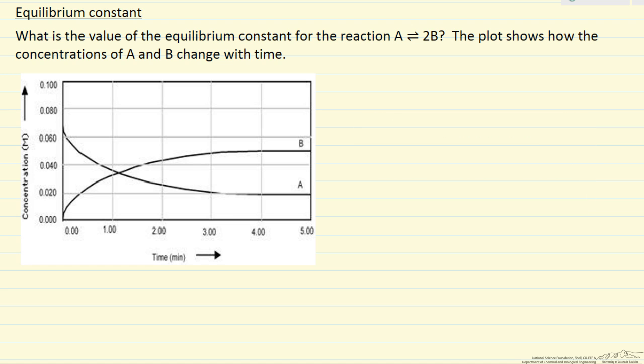So we are going to calculate a value of Kc, which would be the concentration of B squared because of the stoichiometry here, over the concentration of A.